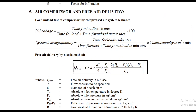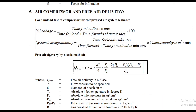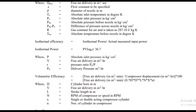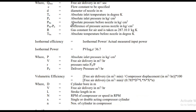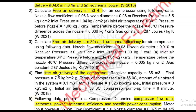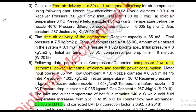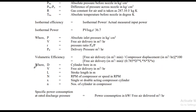For air compressor, the key parameters to calculate are: free air delivery, isothermal power, isothermal efficiency, and volumetric efficiency, and then specific power consumption. There are about 4 key equations in the data sheet. You need to identify the correct values and apply the appropriate equation from the data sheet.